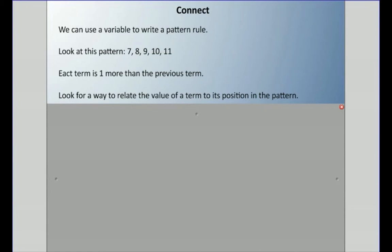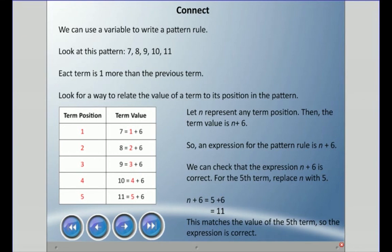We can also use a variable to write a pattern rule. Looking at the pattern 7, 8, 9, 10, 11 — it goes up by one each time. But we can look for a way to relate the value of each term to its position in the pattern. The first term is in position one, the second in position two, and so on — there are five terms going up by one each time. We could use the letter n to represent any term position.